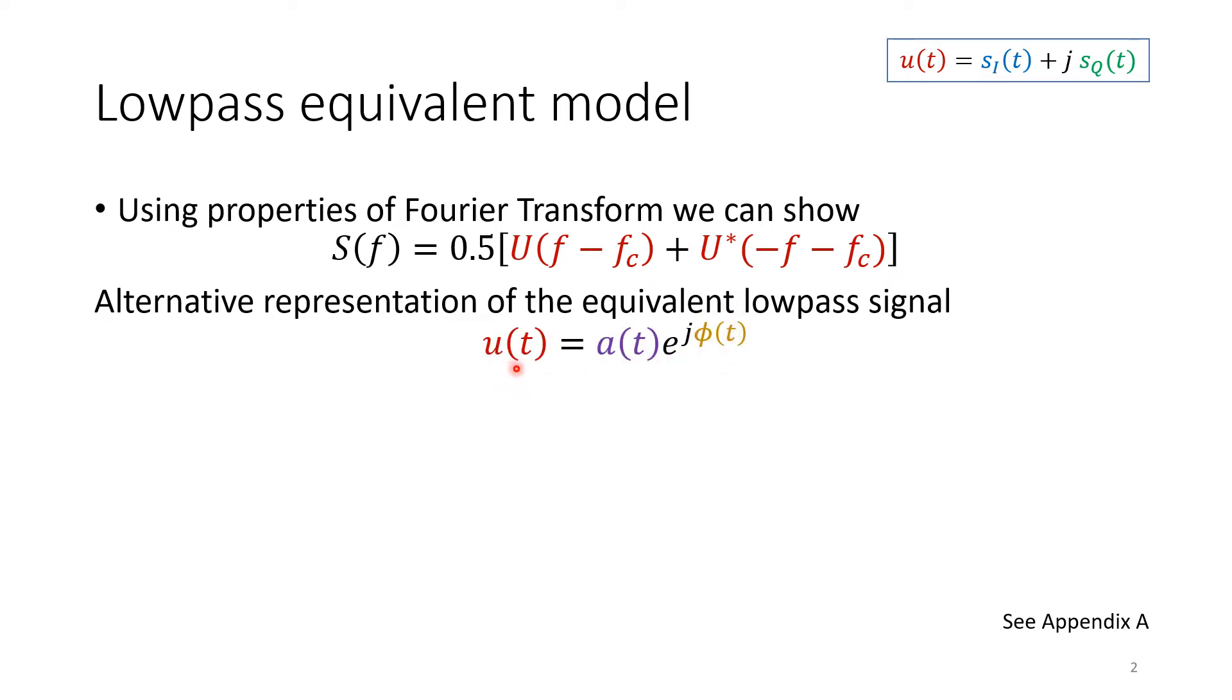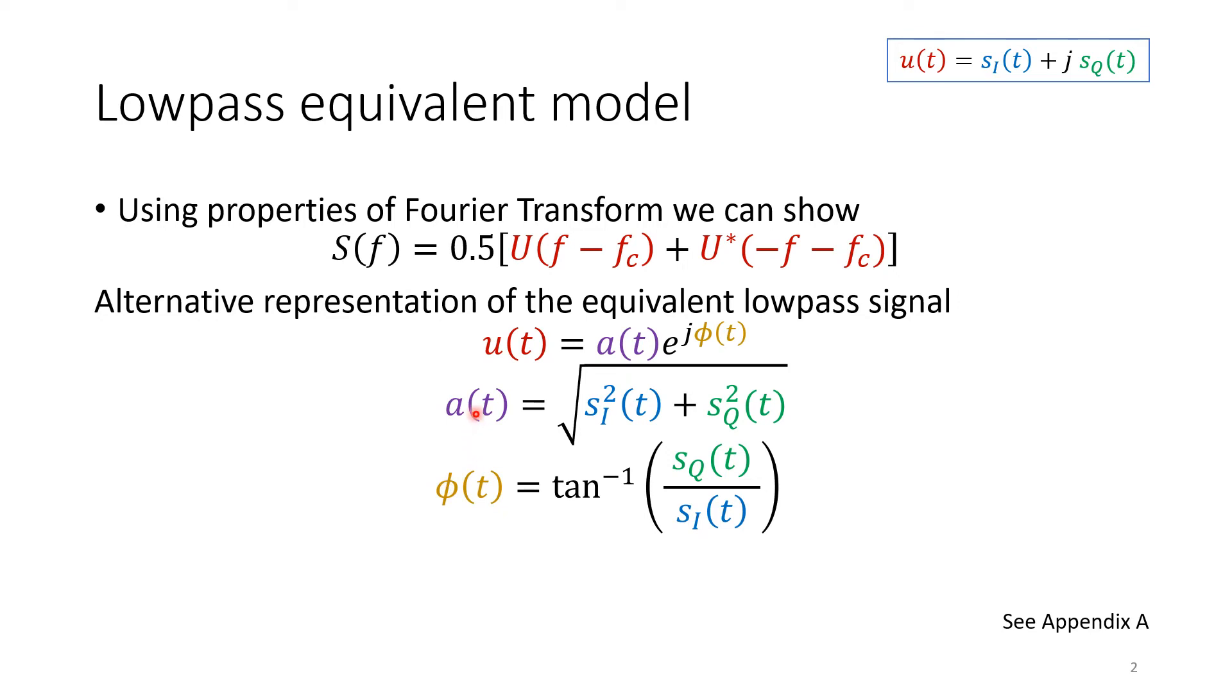We can have u(t) equal to the shifted version of the bandpass signal where a is the amplitude. This is a polar representation. We had the Cartesian representation in terms of i and sq. We now have the polar representation in terms of a and phi.